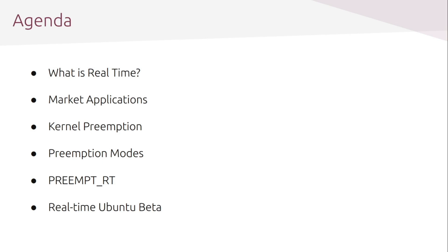Central to the whole concept of real-time is preemption, so we're going to discuss what preemption is all about, as well as the current preemption modes available in mainline Linux and their limitations — why there is a need for a patch, PREEMPT_RT, that is not yet fully upstream. It is slowly being mainlined but not yet fully upstream. The second part of this presentation will be more technical as we go through the details of preemption.